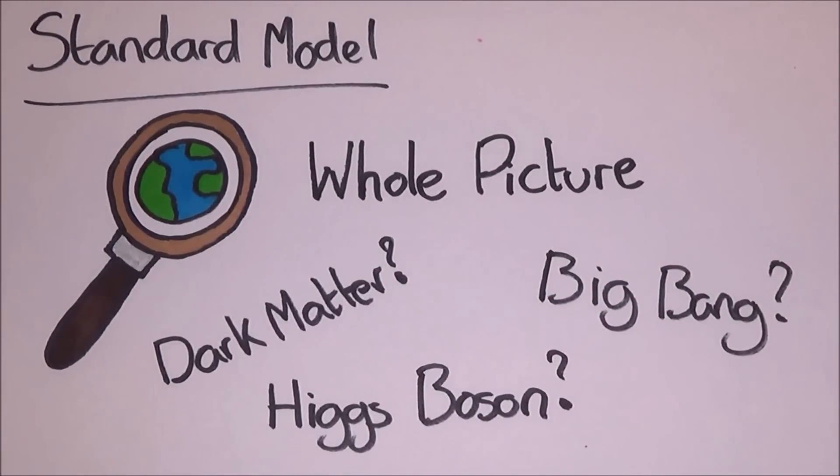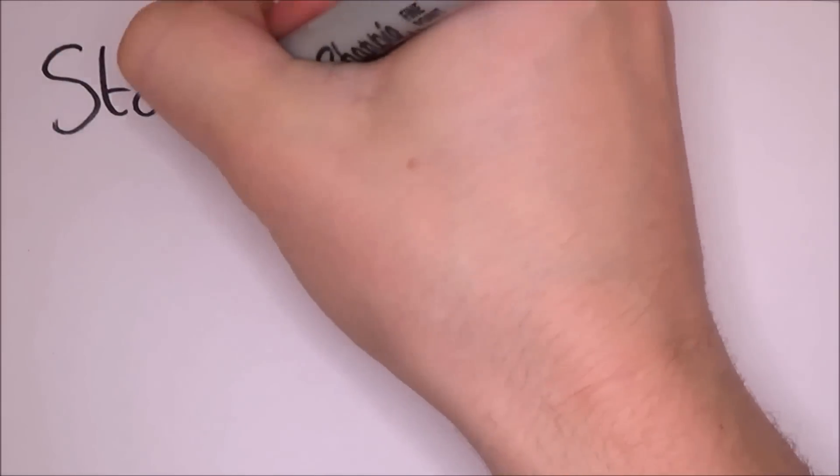It doesn't explain why there are such variations in the masses of generations. There are still a lot of questions. Where is the Higgs boson? Hopefully it's in a couple of videos time. But that whole area is very unclear about if we found it or not. You see why this theory is very incomplete.